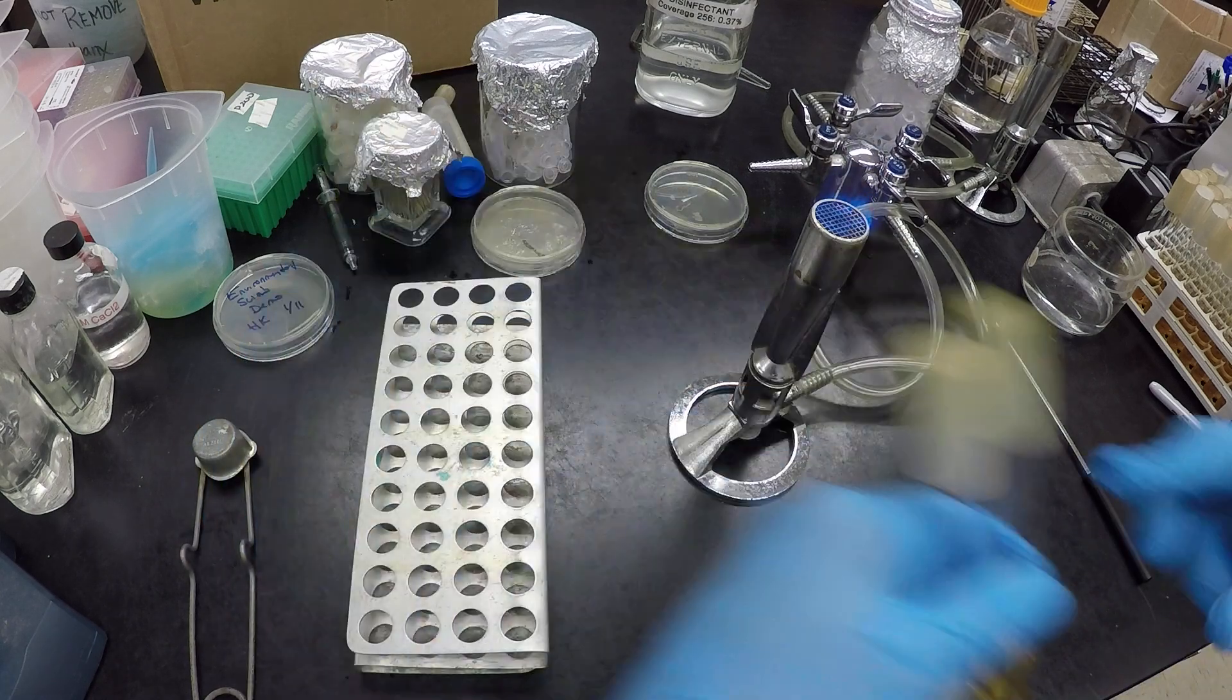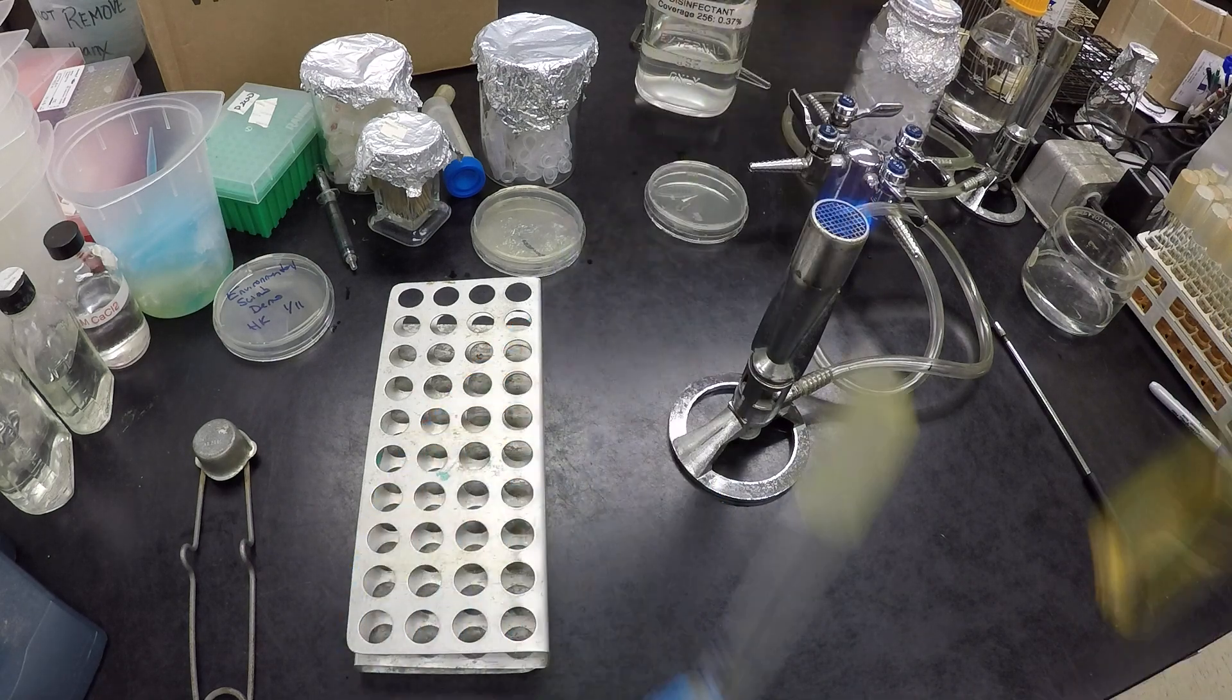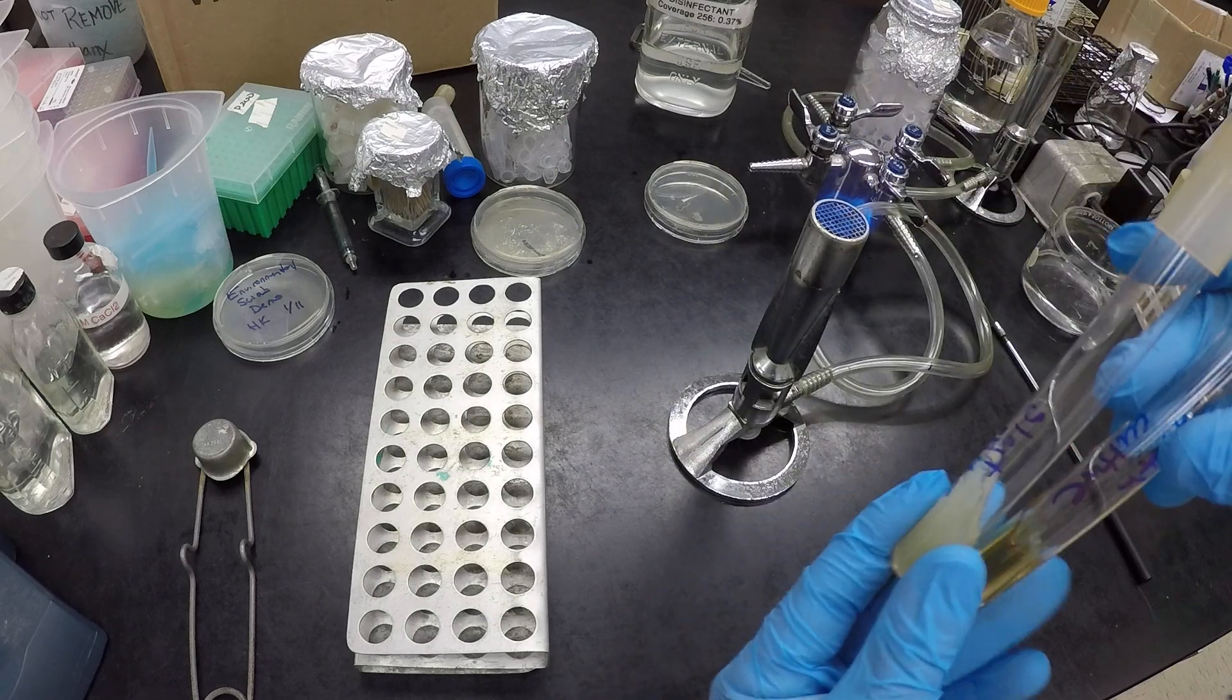And our tubes for the most part are going to come in two forms: our slant, which is agar in a tube slanted, and our broth, which is liquid medium. So we should know these already.